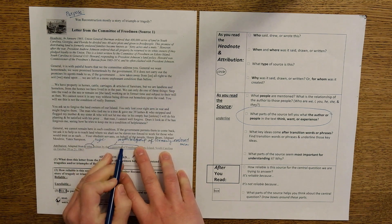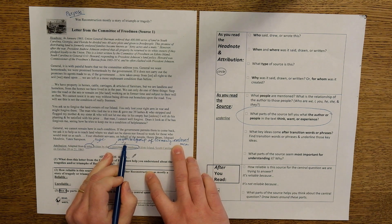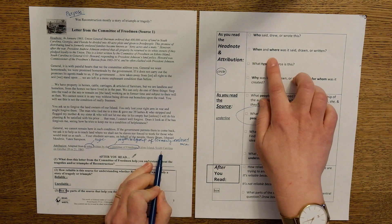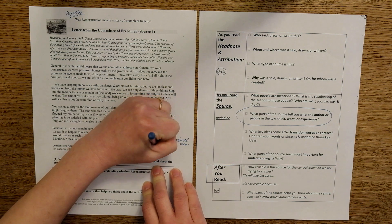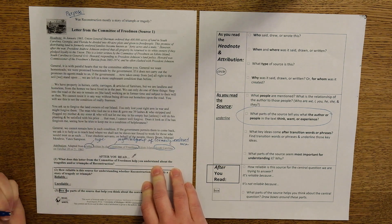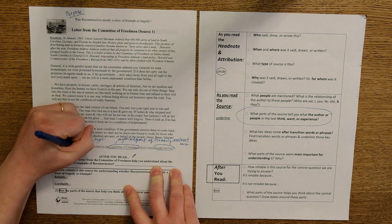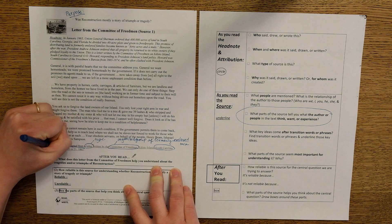And when I read freedmen, I know that this is referring to formerly enslaved African American men. So an organized group of formerly enslaved men who are writing where in South Carolina, or from South Carolina, and when in October of 1865.